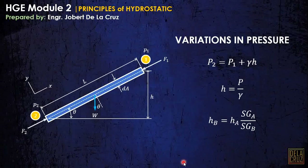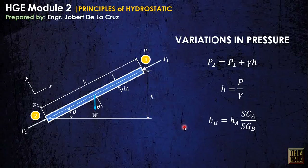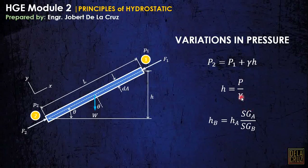These are the variations of pressure. As you can see in the figure, the pressure at point 1, or the difference in pressure between point 1 and point 2, is just equal to P2, which is P1 plus the difference in height. As we all know, pressure in a liquid varies as the height increases.